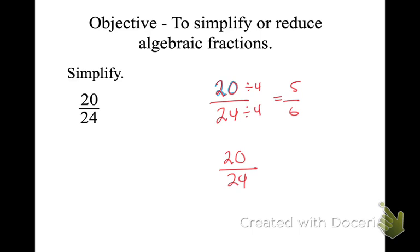So when we reduce a fraction, we're not going to write that little division notation. We're going to do it in our heads. When I divide 20 by 4, I'm left with 5. When I divide 24 by 4, I'm left with 6. So we're left with 5 over 6. This is what I was trying to train you to do for this chapter's fractions.